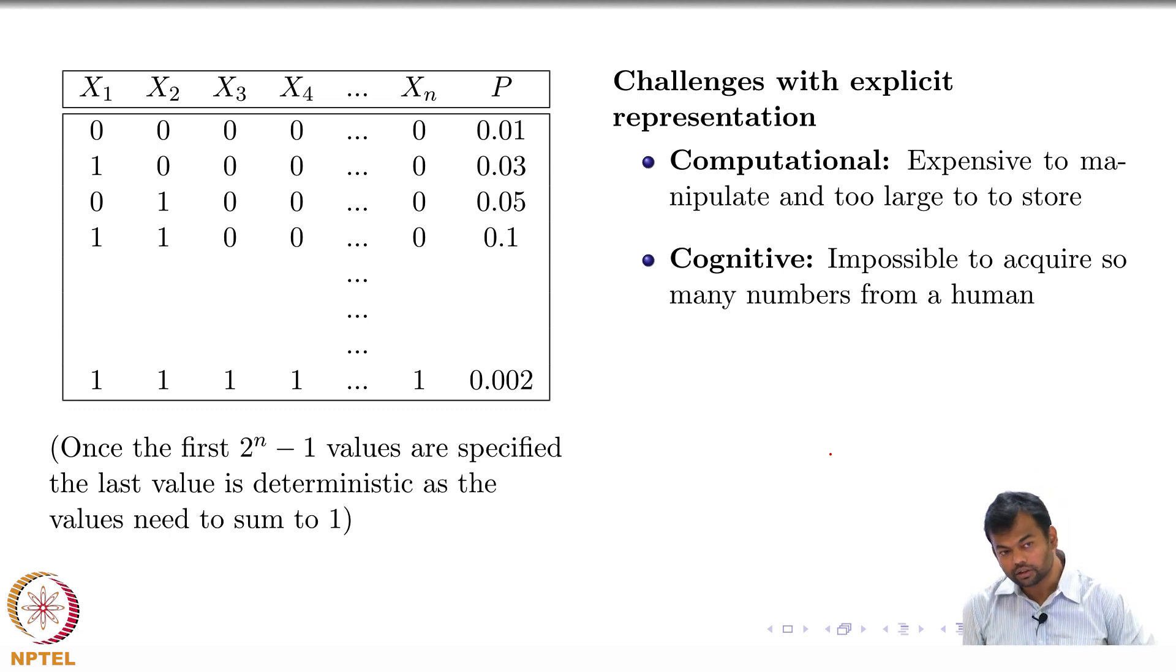What is the statistical problem? How many parameters do you need to learn? 2 power n. More the number of parameters, more data you need. To really learn these 2 raise to n values, you will need more and more data. Otherwise, whatever you learn is not going to be statistically significant. Because you have these 2 raise to n possible entries in your table, you need to at least see each of these entries 100 times to be able to figure out what their probabilities are. You just seeing them once itself is a challenge.